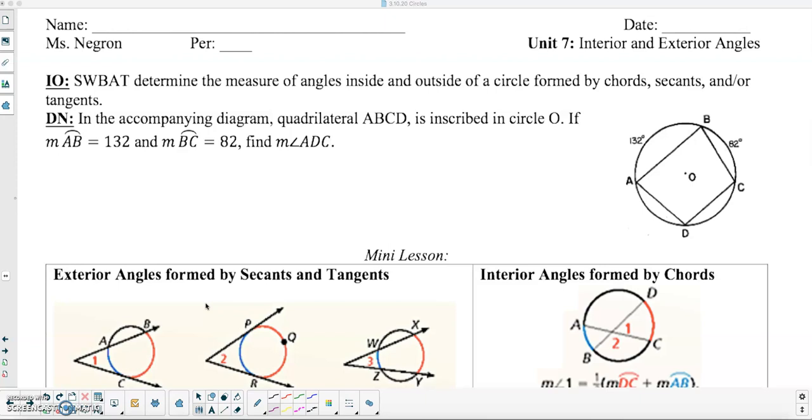So if you look at the DO-NOW, it says in the accompanying diagram, quadrilateral ABCD is inscribed in circle O. If the measure of arc AB is 132 degrees and the measure of arc BC is 82 degrees, find the measure of angle ADC.